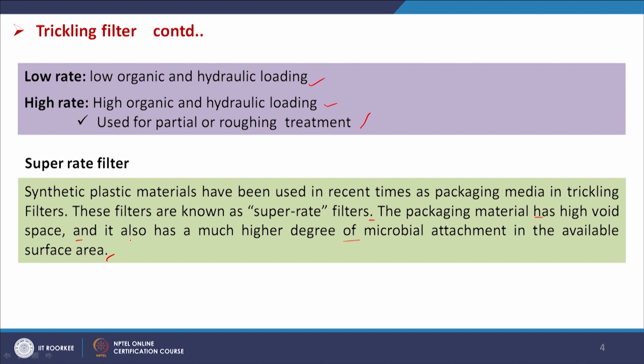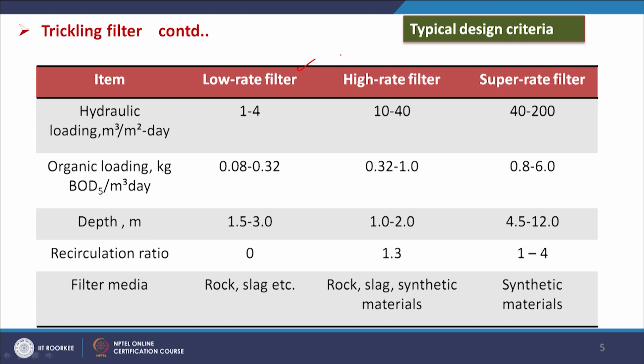Microbial layer development is influenced by many factors: the heterogeneity of the surface and the affinity and compatibility of the microorganisms with the surface of the media. Plastic materials have shown very good performance in this respect. Some typical design criteria for low rate, high rate, and super rate filters are provided in this slide. Hydraulic loading in cubic meters per square meter per day is 1 to 4 for low rate, 10 to 40 for high rate, and 40 to 200 for super rate.